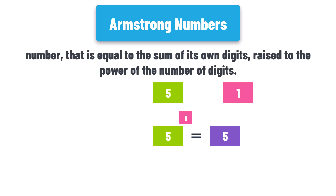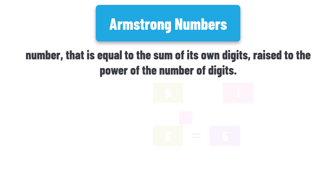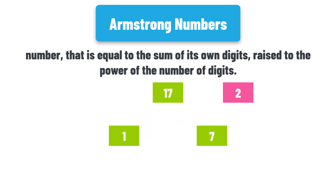Let's check another number, for example the number 17. This number consists of two digits, one and seven. So we have two calculations: one to the power two and seven to the power two. The result here will be 50. So the result is not exactly the same as the number, therefore the number 17 is not an Armstrong number.